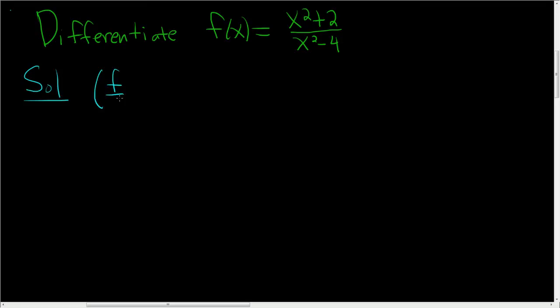So f over g, and if you differentiate this, there's a formula: you get the derivative of the first times the second minus the first piece times the derivative of the second piece, f prime g minus f g prime, all divided by little g squared.